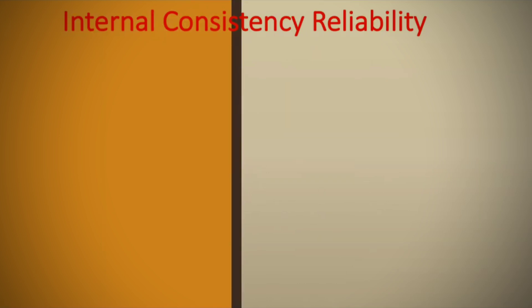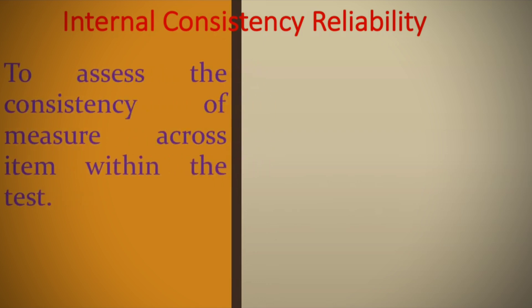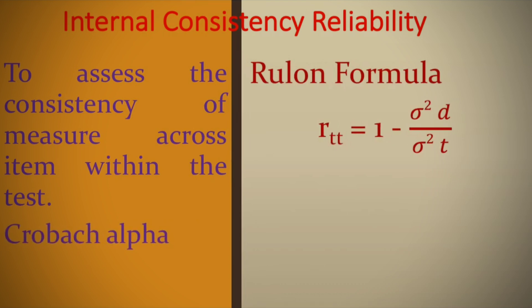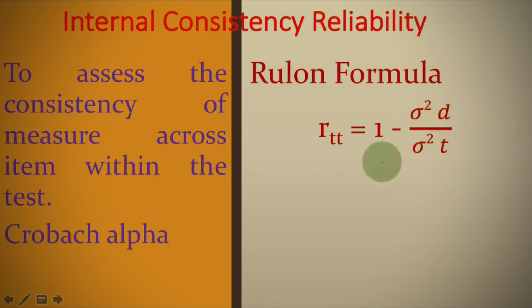Internal consistency reliability is used to assess the consistency of measurement across items within the test. While estimating internal consistency, we often use Cronbach's alpha. There is also Rulon's formula for internal consistency, where D designates the difference between the two halves of an examinee's score, and the formula uses the variance of the differences and the variance of the total to give the reliability of the total score — not just the half score. Rulon's formula can also be applied to the parallel form, where the coefficient indicates the reliability of the composite sum of the two forms.